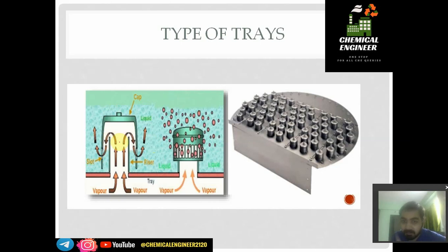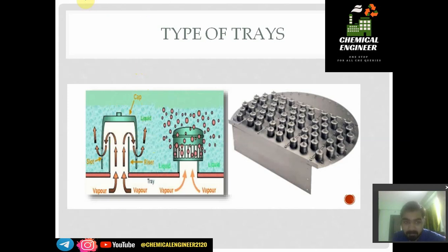One important thing to note: these bubble caps are not moving. They are stationary — they are welded into the tray. Many chemical engineers don't know this until they go to industry. The bubble caps do not rotate or move; they are fixed and welded. There is a riser so that liquid does not directly come down, and a slot is provided for vapors to come out. This is all about the bubble cap tray.